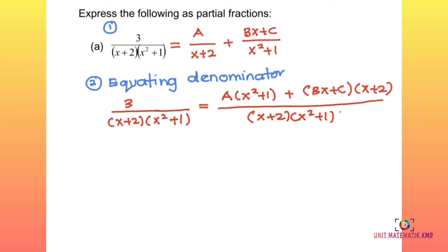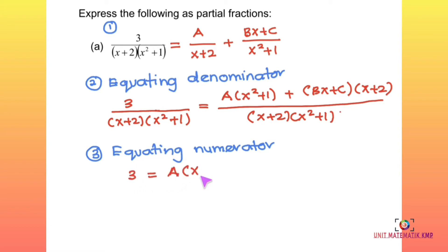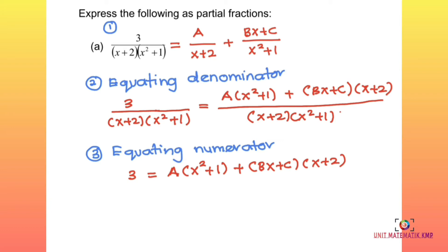Step 3: equate the numerators. So 3 = A(x² + 1) + (Bx + C)(x + 2). We will use the comparing method to find A, B, and C, rather than substitution, because substitution can be difficult when the denominator contains a quadratic that cannot be factorized.